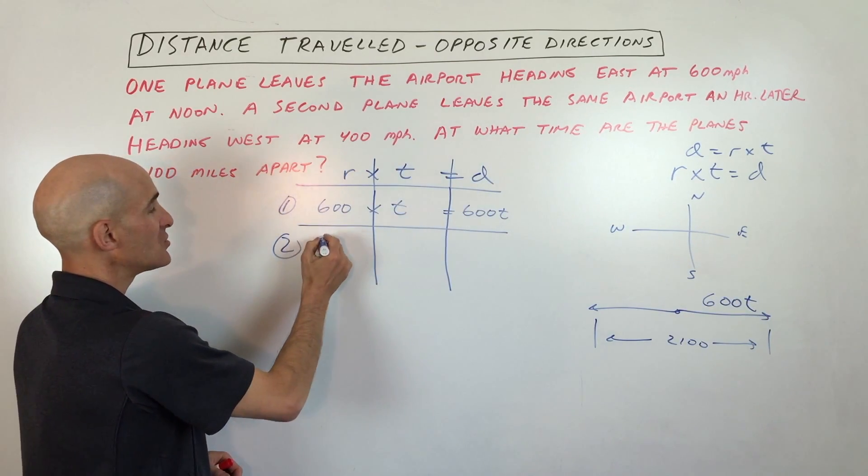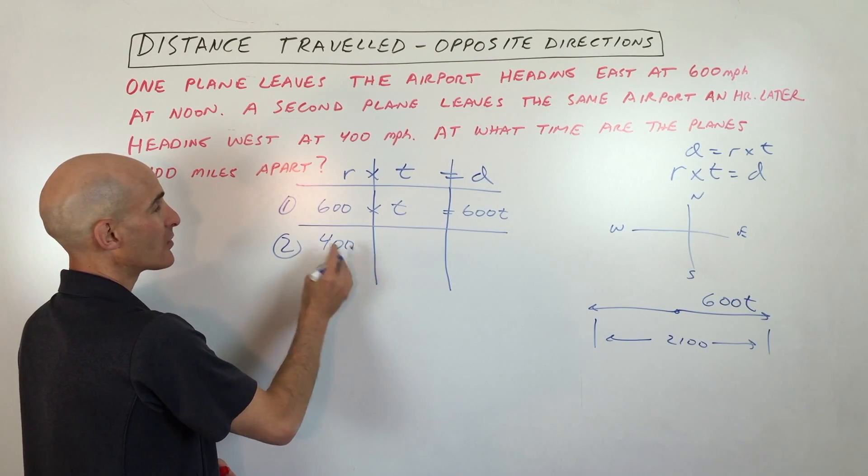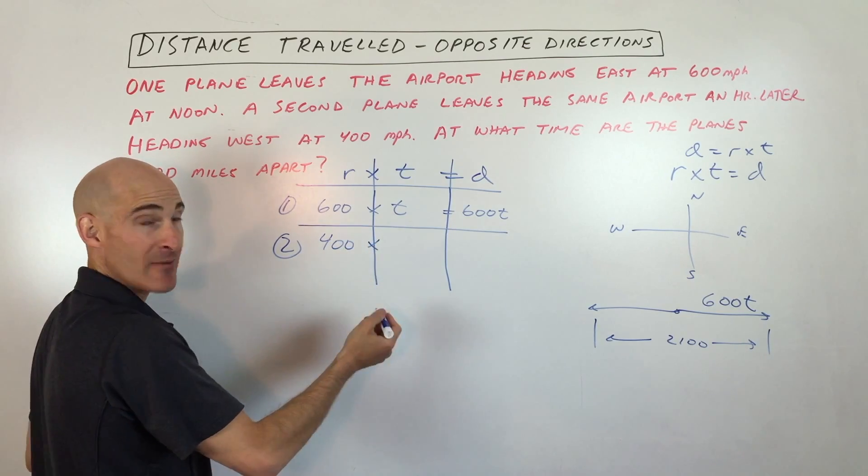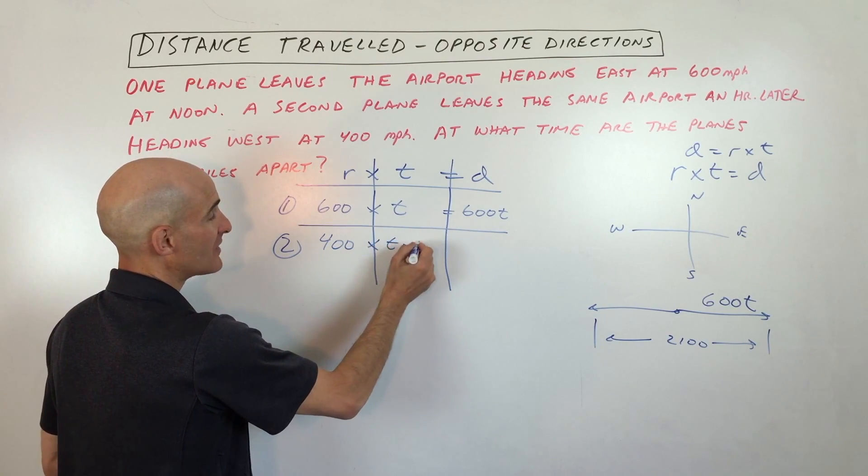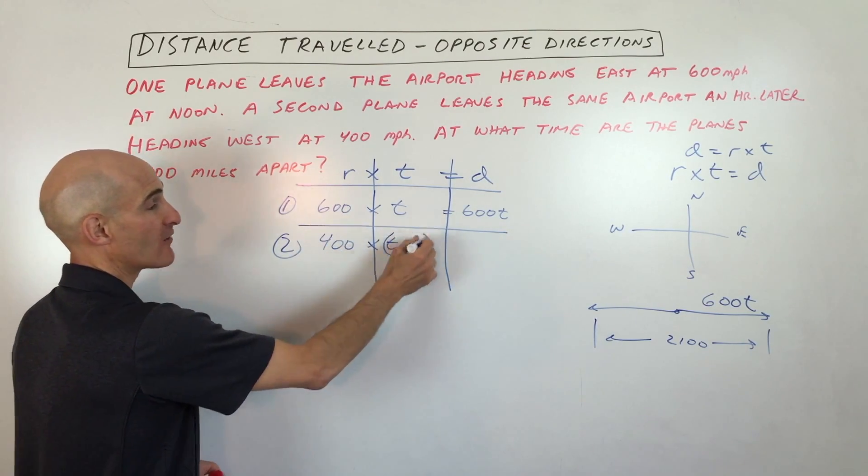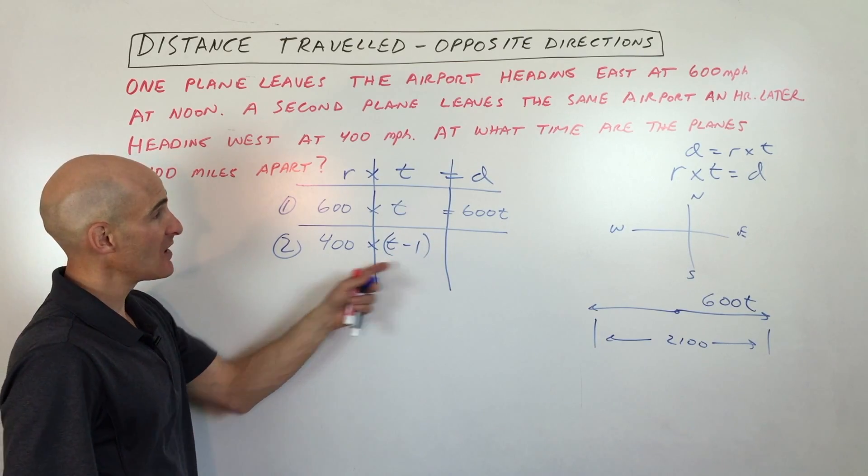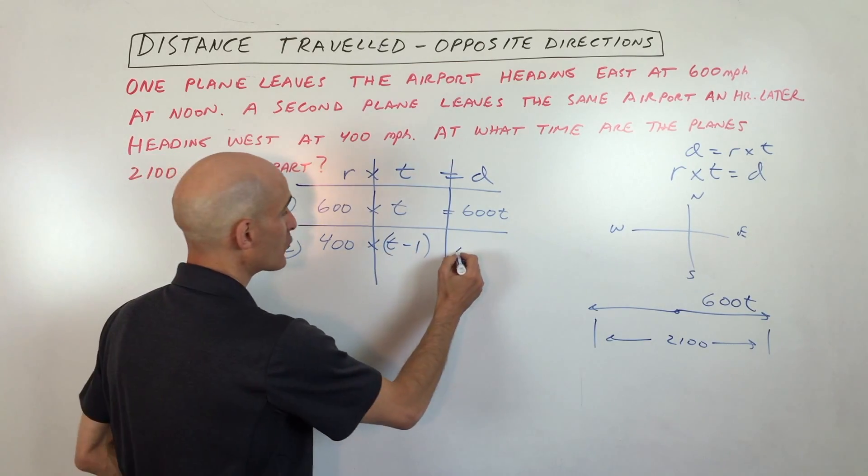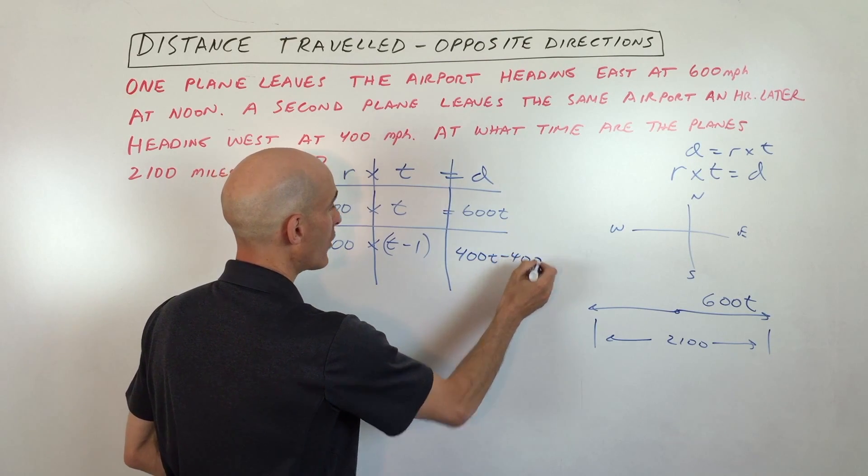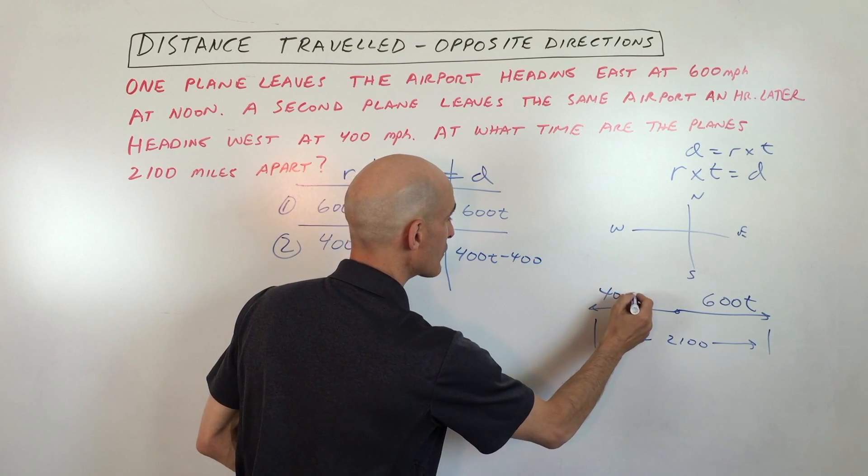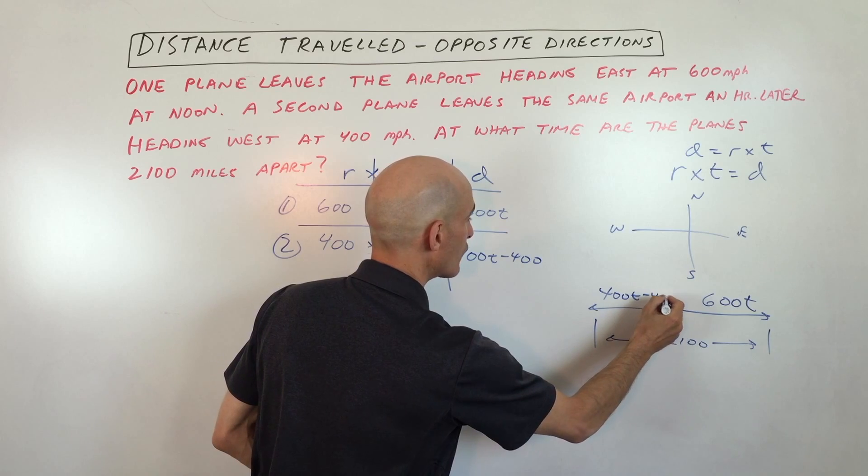Over here, plane 2 is traveling at 400 miles per hour, a little bit slower, and on top of moving slower, it actually left an hour later, so the time it's been traveling is t minus 1. And if we go ahead and multiply these together, we get 400t minus 400. So I'm just going to put that distance here, 400t minus 400.